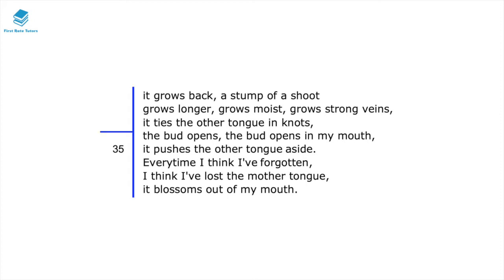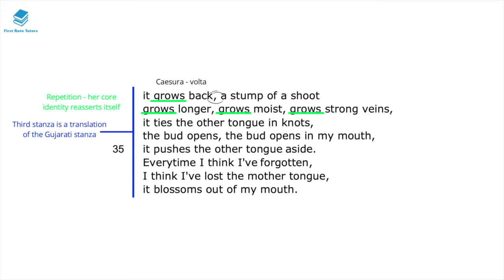This final stanza is really powerful and in many ways serves as a translation of the previous Gujarati stanza. There is a repetition of the growth of her mother tongue — though she goes to sleep thinking she's forgotten it, instead of rotting away, it starts growing back as a small shoot. This emphasizes that the speaker's core identity continues to reassert itself and cannot be easily erased. The caesura is used as a turning point — a volta — showing that even if she thinks she's erased her original identity by adapting to the new culture, it still comes back.